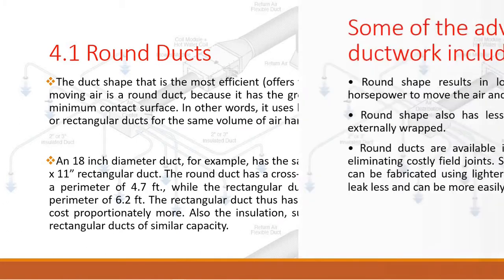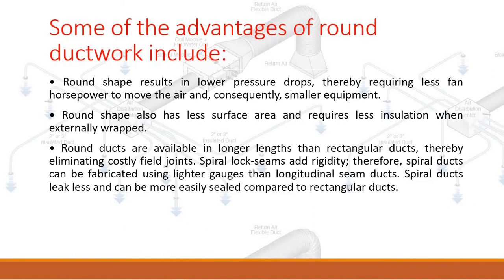Advantages of round ductwork include: round shape results in lower pressure drops, requiring less fan horsepower to move the air and consequently smaller equipment. Round shape also has less surface area and requires less insulation when externally wrapped. Round ducts are available in longer lengths than rectangular ducts, eliminating costly field joints. Spiral lock seams add rigidity, so spiral ducts can be fabricated using lighter gauges than longitudinal seam ducts. Spiral ducts leak less and can be more easily sealed compared to rectangular ducts.